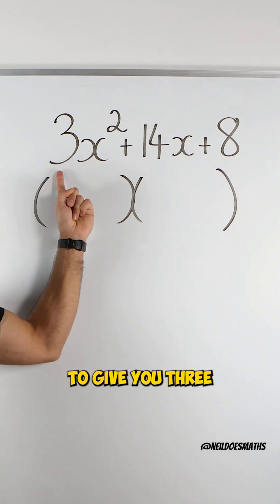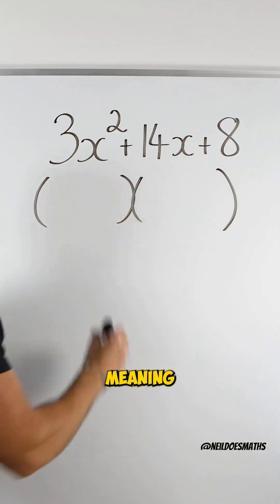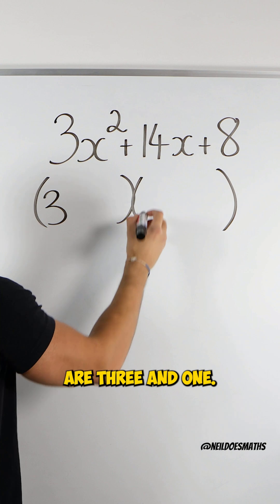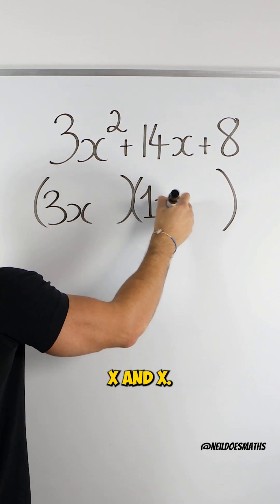Now, these two terms have to multiply to give you 3x squared. 3 is a prime number, meaning its only factors are 3 and 1. What multiplies to give you x squared? x and x.